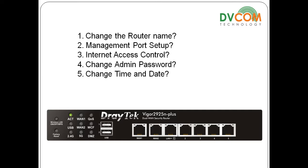After that, internet access control — this is how you enable access to your DrayTek device from outside. For example, if you are not in your office and want to access your device temporarily, this is how you provide access. However, it's not recommended — it's always best to use SSL VPN to connect to your internal network and then access your router.